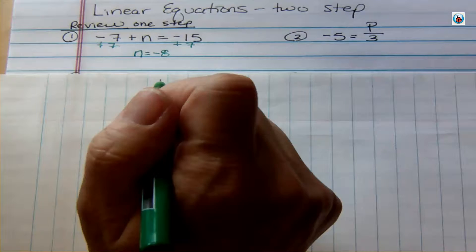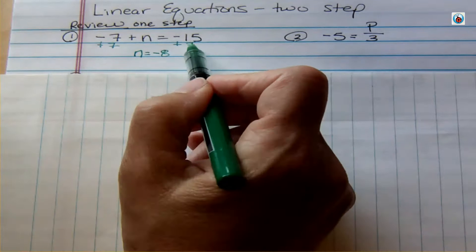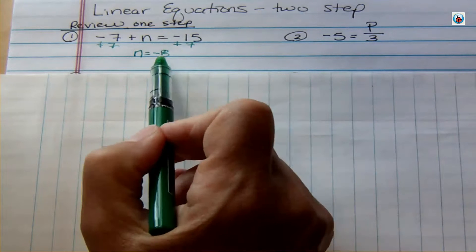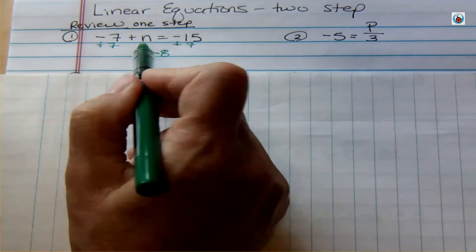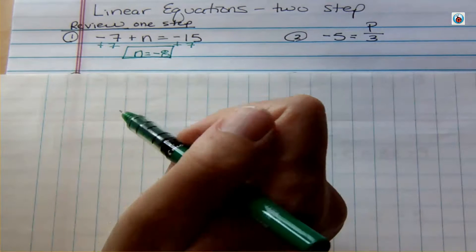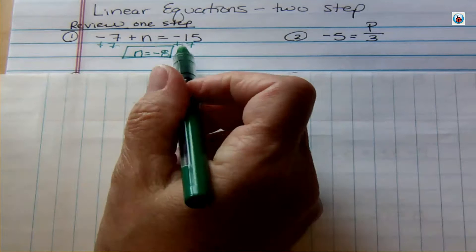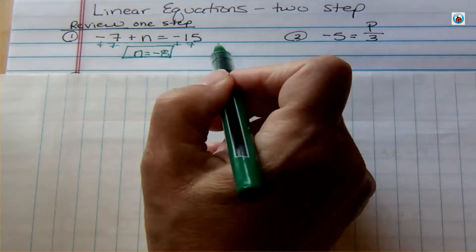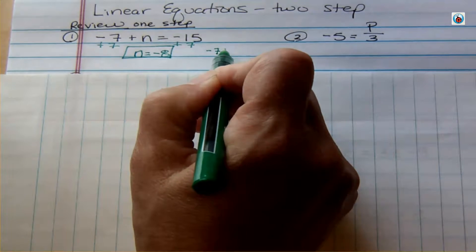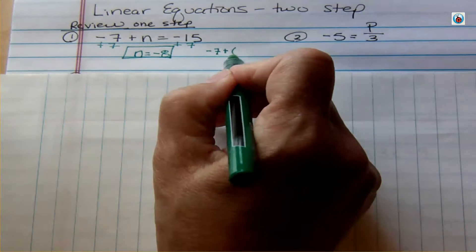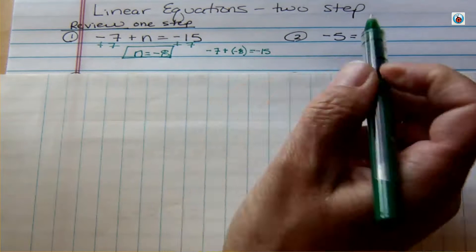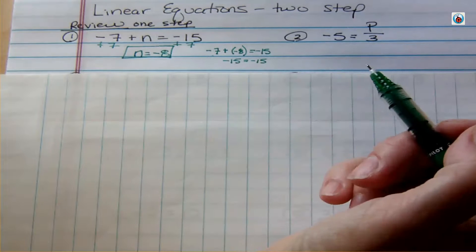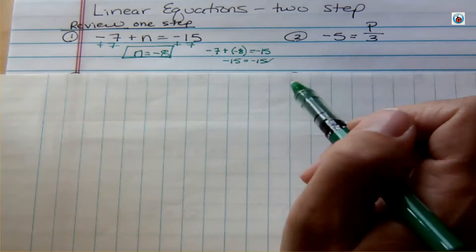Talk to your instructor about calculator use — it'd be nice to do these without one. You can see there are more negatives, 8 more, when you get down to it. Practice the way you'll be tested. Now for the check: negative 7 plus negative 8 equals negative 15. We're plugging the answer in to see if it makes the equation true, and if so, we've checked it.